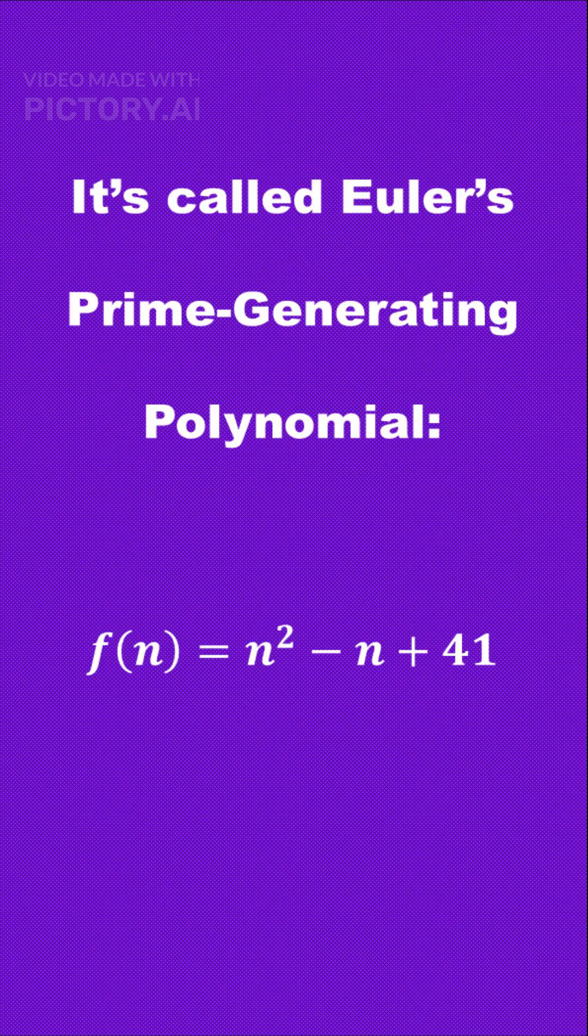This enchanting formula is known as Euler's prime-generating polynomial, expressed as f(n) = n² - n + 41. It's a simple yet powerful equation.